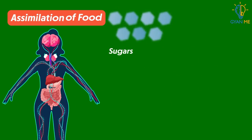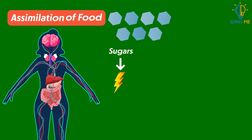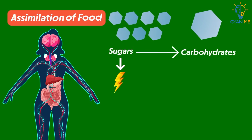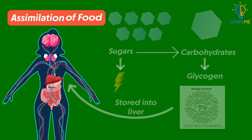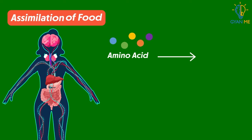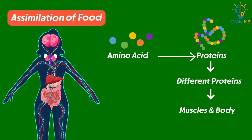Similarly, sugars — the end products of carbohydrate digestion — are used to produce energy by our cells. Excess fatty acid is converted back into carbohydrate called glycogen in the liver and stored there. Amino acids, the building blocks of proteins, are utilized to synthesize different proteins required for muscles and body functioning.